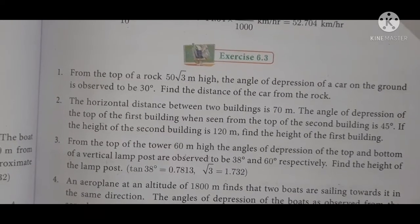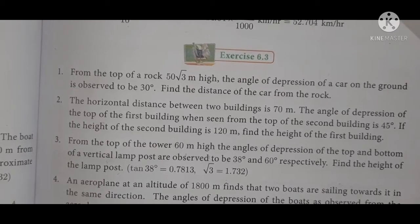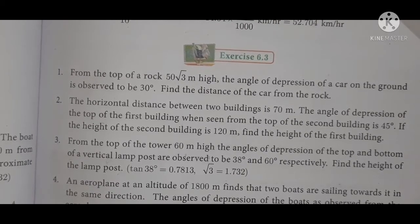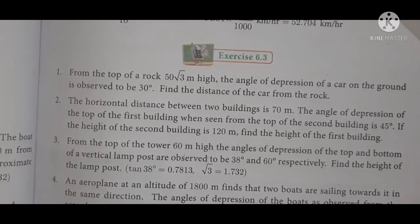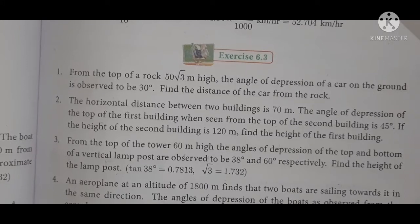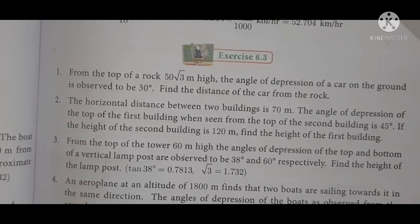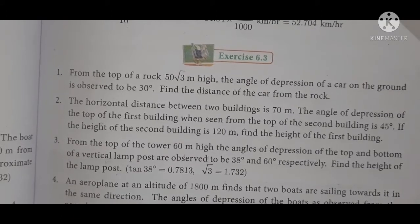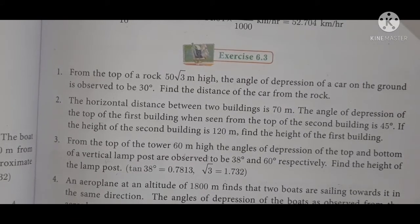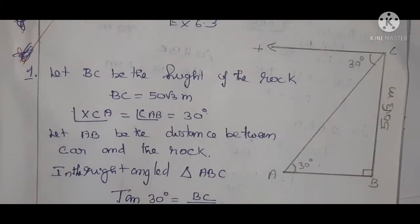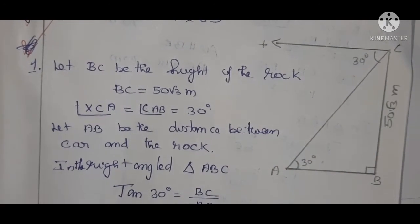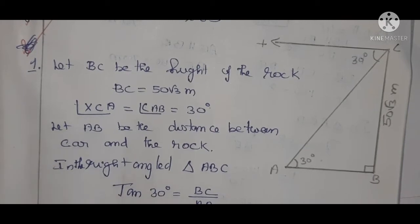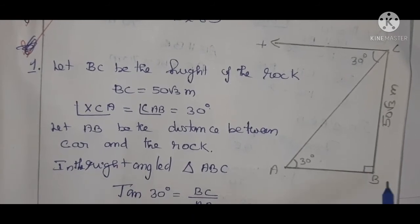Exercise 6.3, Question 1: From the top of a rock 50√3 meters in height, the angle of depression of a core on the ground is observed to be 30 degrees. Find the distance of the core from the rock. In this problem, a rock of height 50√3 meters is given. BC is the height of the rock = 50√3 meters. AB is the distance between the rock and the core.